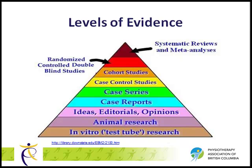This image shows the pyramid of evidence based on the research study design. When we are looking for the best evidence available, we can consider what types of studies have been published. At the bottom of the pyramid, research may involve investigations in the lab with test tube or animal studies. Based on the amount of research that already exists and the specific questions that researchers are trying to answer, there are other types of study designs.